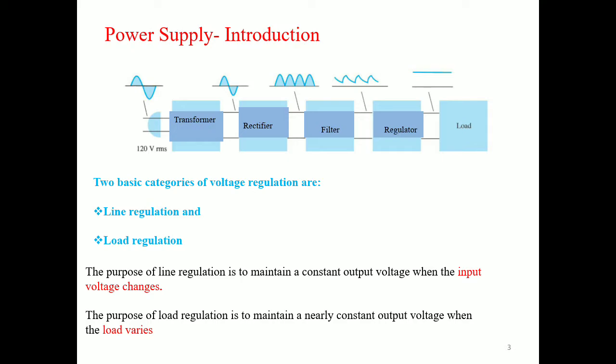The output of the transformer is fed into the rectifier, which changes the AC value to the corresponding DC value. The filter reduces the fluctuation in the rectified output voltage, or ripples, providing a constant DC voltage. This value is given to the IC voltage regulator, which gives a constant value to the load irrespective of the changes in the input voltage.